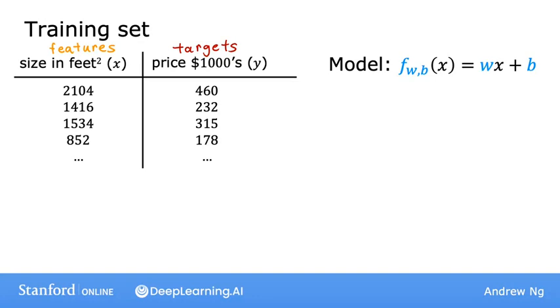To introduce a little bit more terminology, the w and b are called the parameters of the model. In machine learning, parameters of a model are the variables you can adjust during training in order to improve the model. Sometimes, you also hear the parameters w and b referred to as coefficients or as weights.